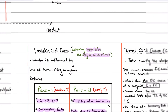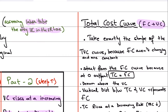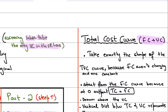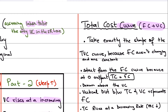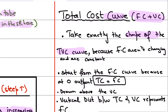Now let's move on to total cost. Total cost is simply the sum of fixed cost and variable cost. The shape of the total cost curve will be exactly like the shape of the variable cost curve. The shape matters because it represents the rate at which total cost is rising. Diminishing returns is the reason behind the shape of both variable and total cost curves.